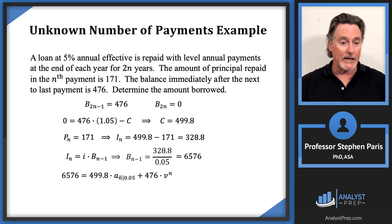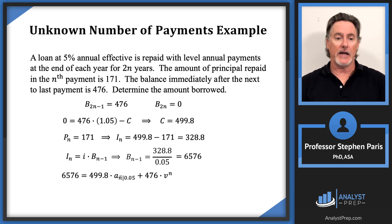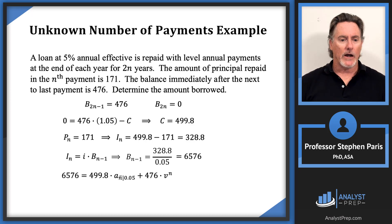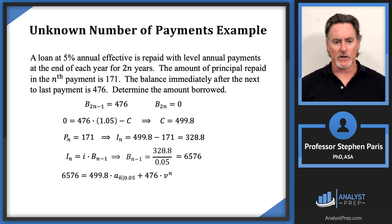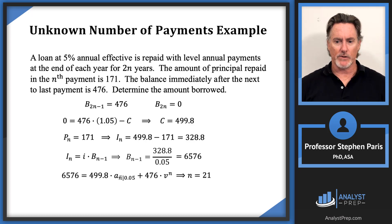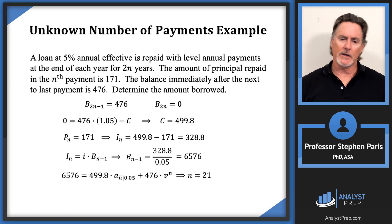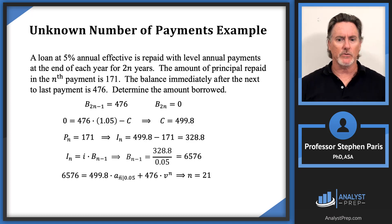On the calculator: enter PV = 6576, PMT = −499.8, FV = −476, I/Y = 5, compute N. You get approximately 21. Again it may not be exactly 21 due to rounding, but n = 21.